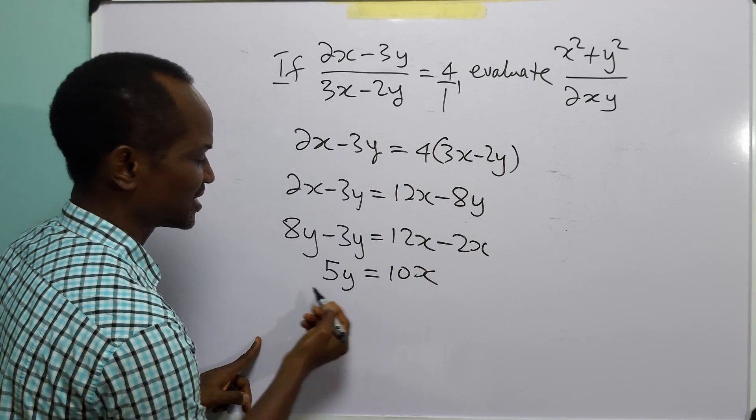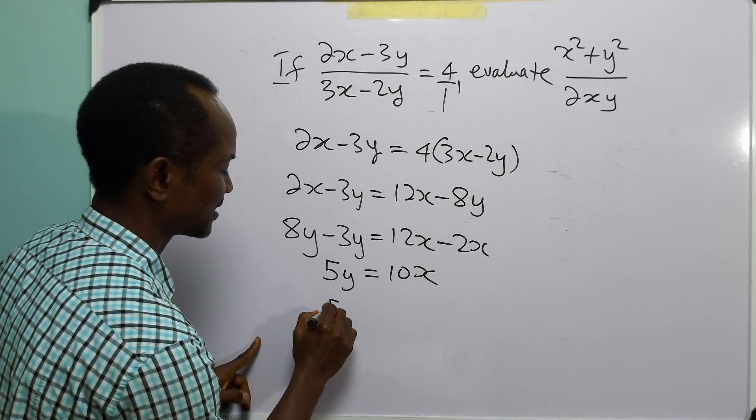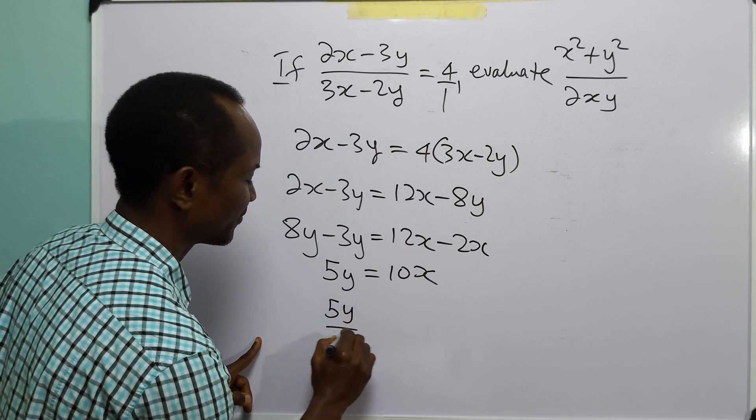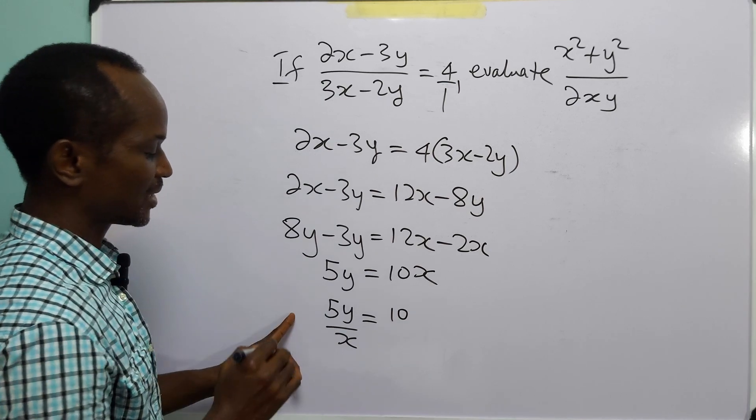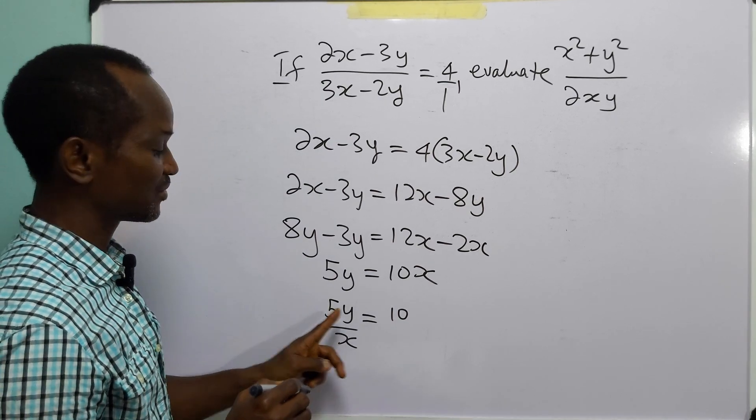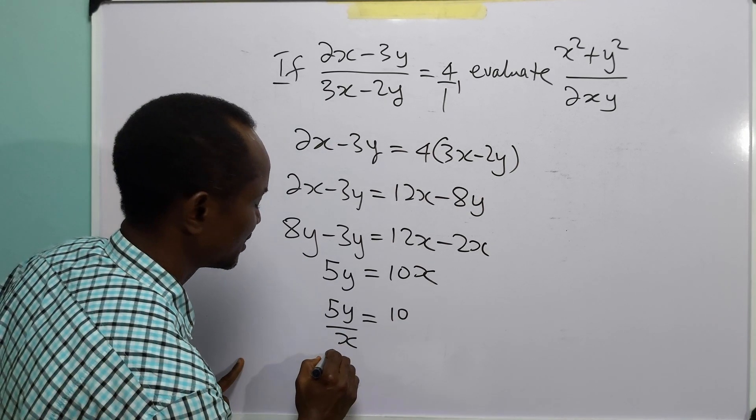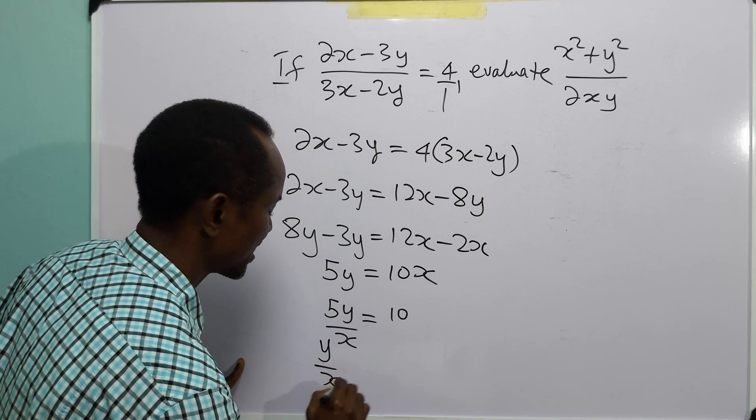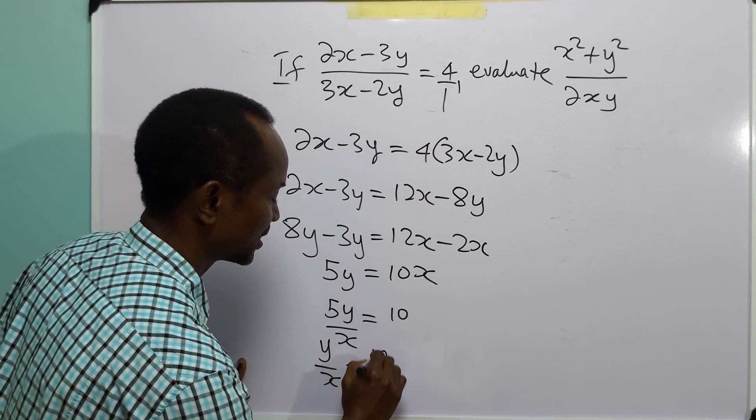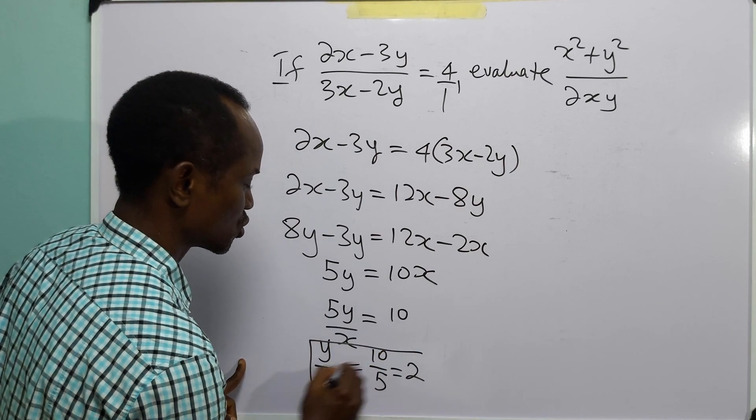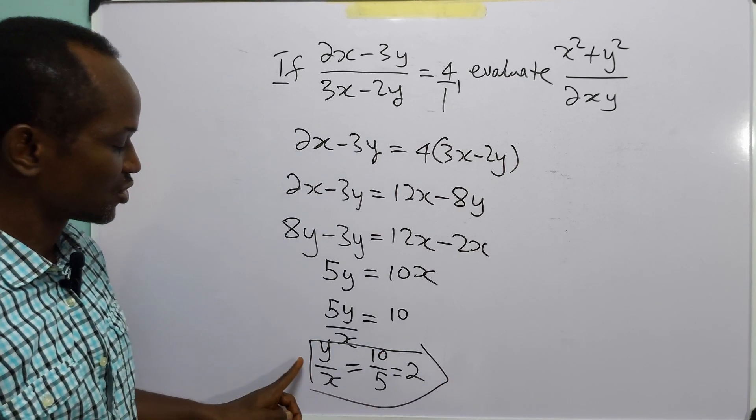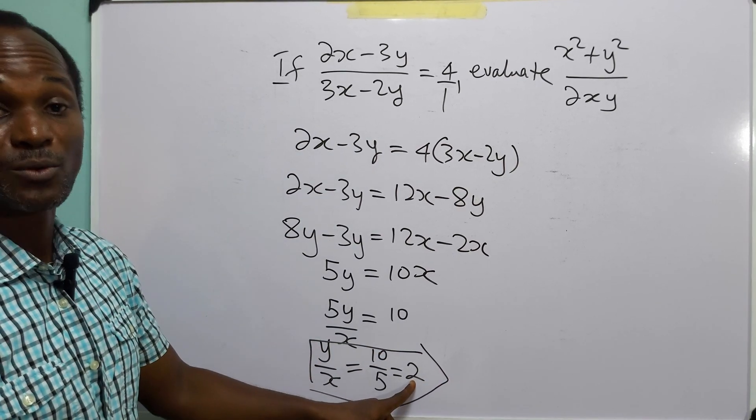We can divide both sides of this equation by x, and we have that 5y divided by x is equal to 10. And we can also divide both sides of this equation by 5 to give us that y over x is equal to 10 over 5, which is equal to 2. So we have that y over x is equal to 2.